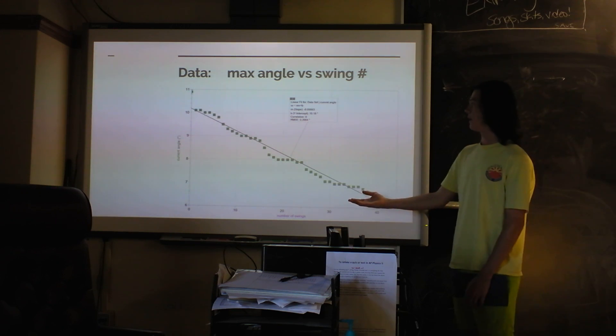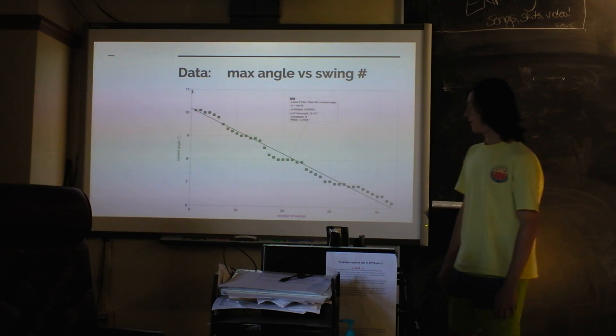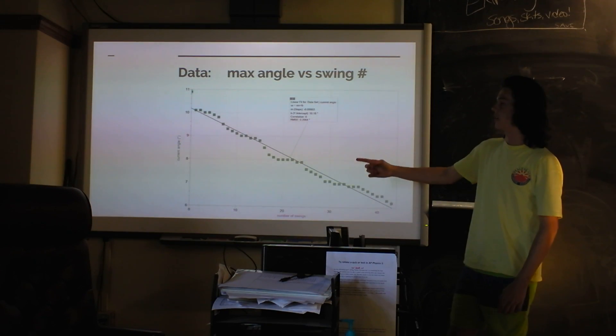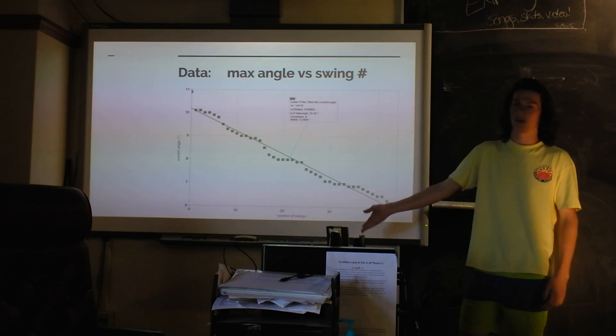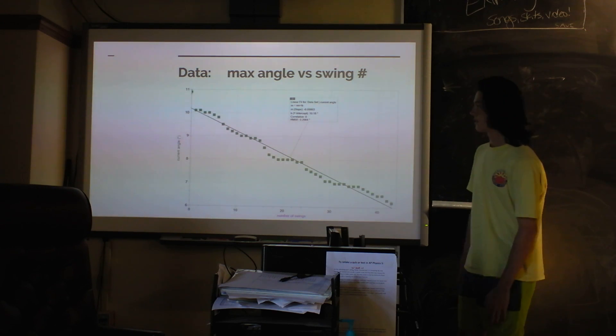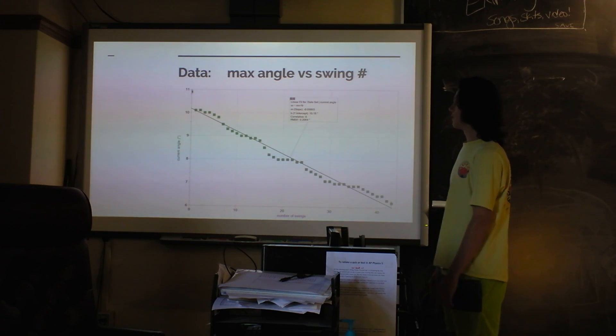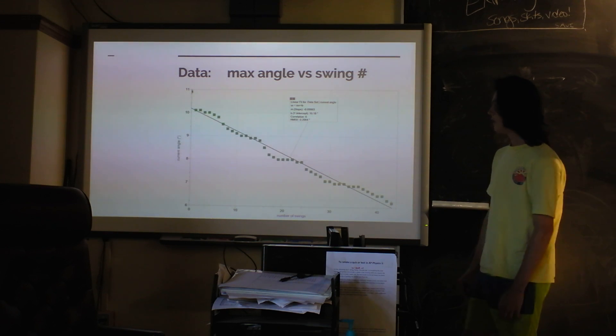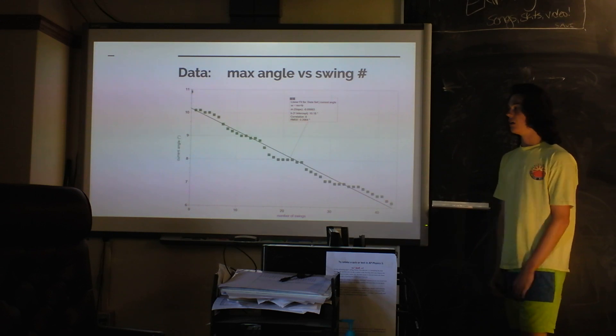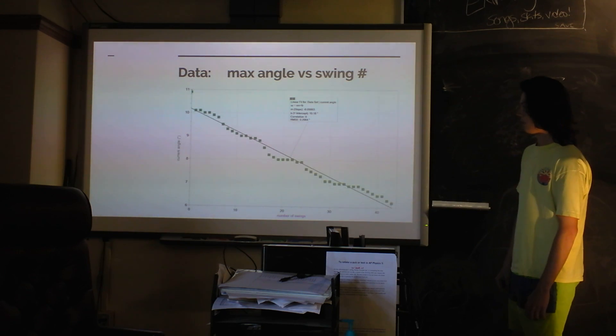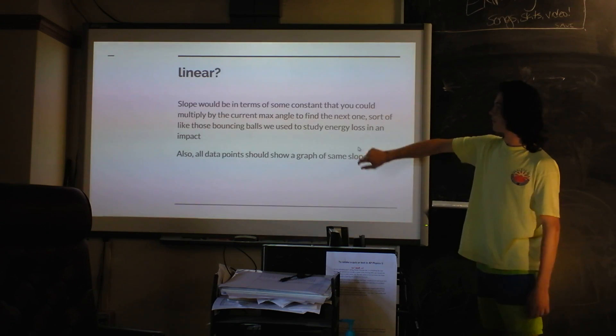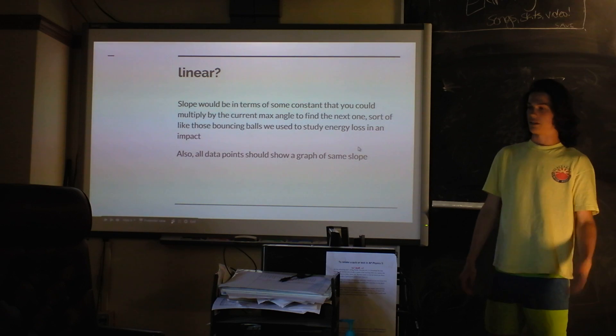So this was my data. I shouldn't have put this graph on here. I meant to put the current angle versus time, but it is the same graph. Because as you know, the period of a pendulum is constant, so it's basically the same graph, just over seconds instead of n. But I mean, as you can see here, it looks clearly very linear. And there is a sort of oscillation above and below the line, but it's pretty consistent. And so I was confused about that.